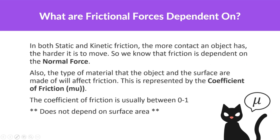What are frictional forces dependent on? In both static and kinetic friction, the more contact an object has, the harder it is to move. Friction is dependent on: number one, the normal force, which is the same thing as contact force; and number two, the type of material that the object and the surfaces are made of — represented by the coefficient of friction, mu. It does not depend on surface area.